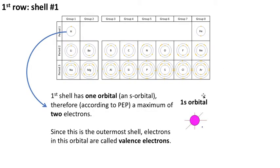I'm just going to take you for a little tour over some of the elements in the various rows. Here's the first row or period of the periodic table. It turns out the first shell only has one orbital. It is an s-orbital. It has a name; it's called the 1s orbital, and therefore the first shell has a maximum, according to the Pauli Exclusion Principle, of two electrons provided they're spin-paired. Now since that is the only shell and it is the outermost shell, those electrons in that 1s orbital are called valence electrons.